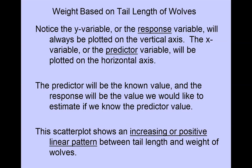Notice the y variable or the response variable is the one plotted on the vertical axis. In this case that was the weight of wolves. The x variable, the predictor variable, is plotted on the horizontal axis. In this case tail length was used as the predictor variable. The predictor will be the known value or the easy to obtain value and the response value will be the one that we would like to estimate if we know the predictor value.